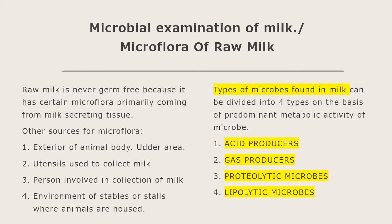The types of microbes found in raw milk can be divided into four types on the basis of the predominant metabolic activities of those microbes. The classification is based on metabolic activities: acid is produced by some microbes, so they are grouped as acid producers; gas is produced by some, so they are grouped as gas producers; microbes which produce proteolytic enzymes like proteases are grouped as proteolytic microbes; and lipolytic microbes which secrete lipases.